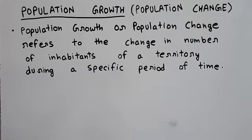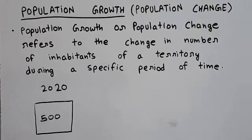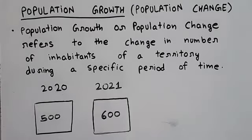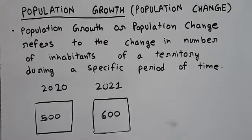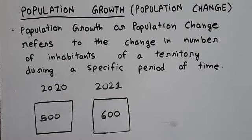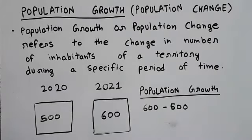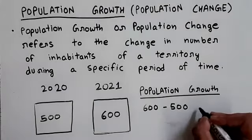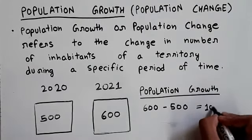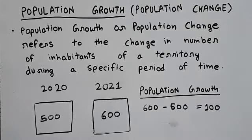I will explain with an example. This is a fixed territory. In 2020, 500 people were here. In 2021, the population is 600. This is a simple calculation — our population grew by 100. In 2021, our population increased by 100 people compared to 2020.